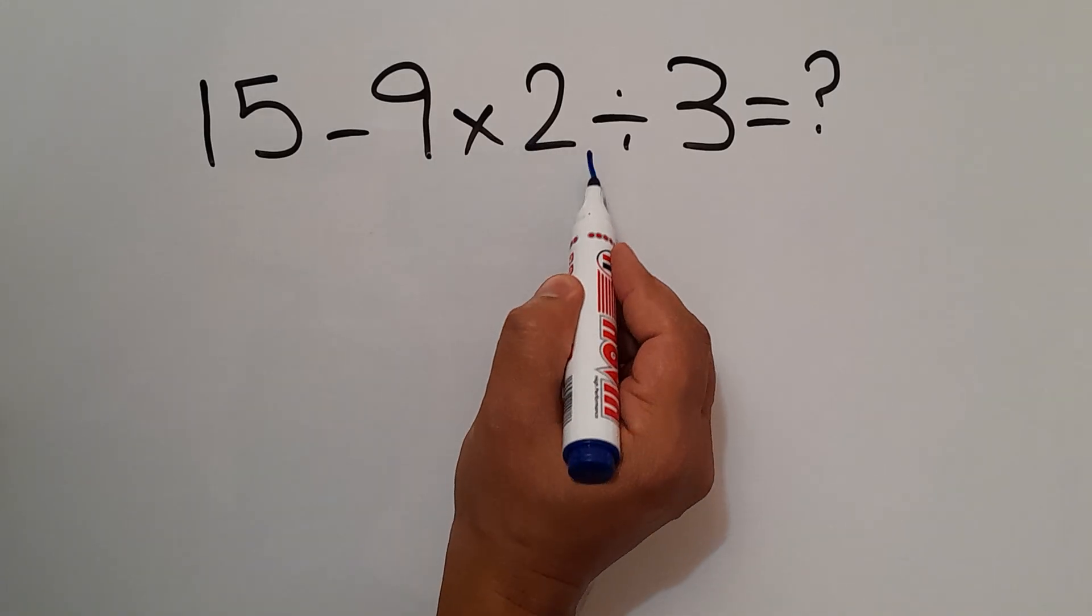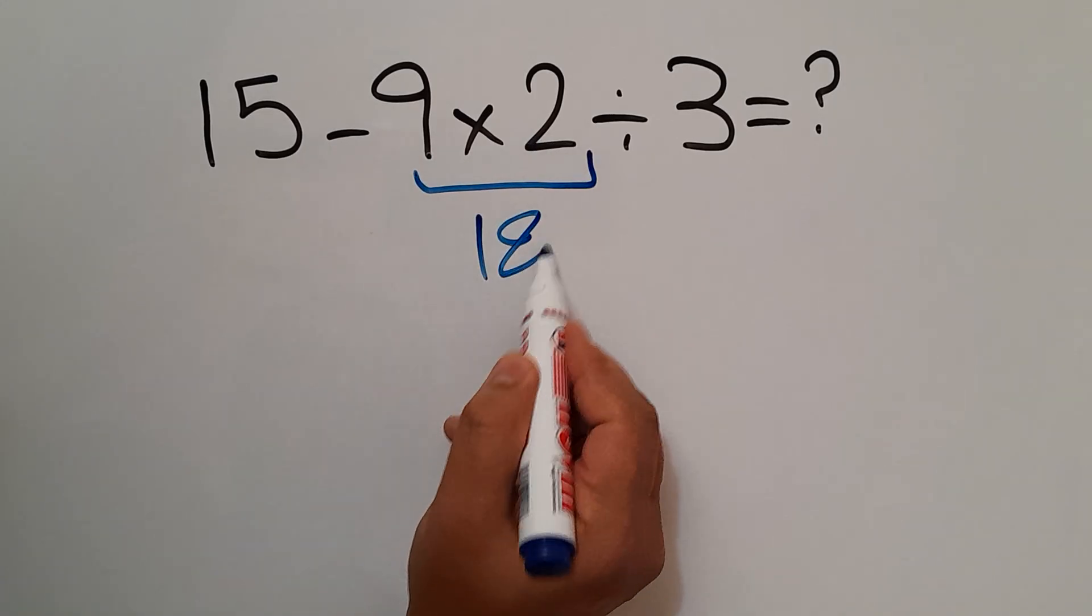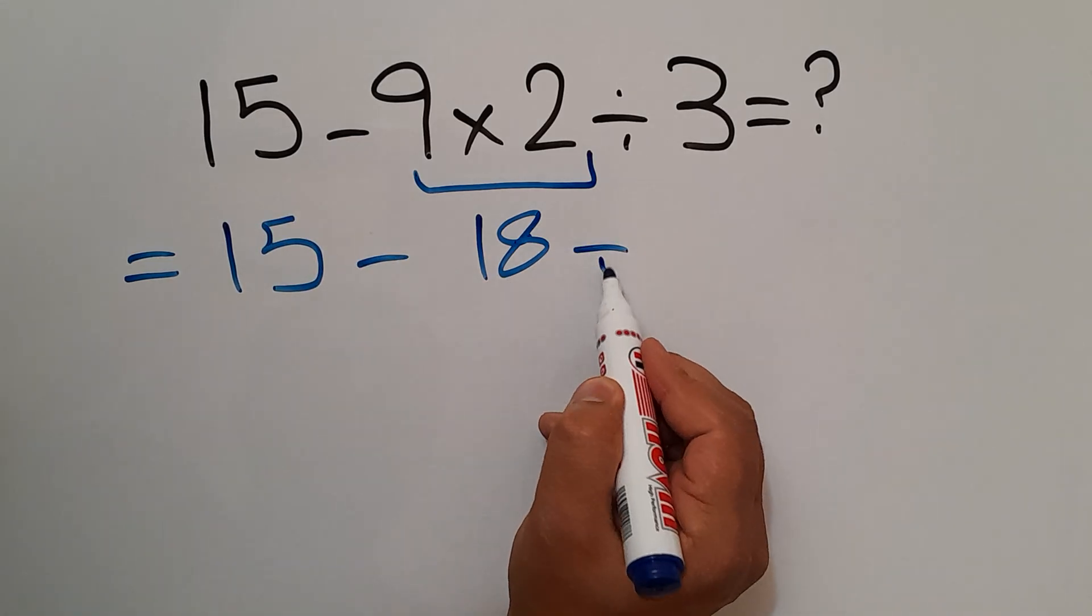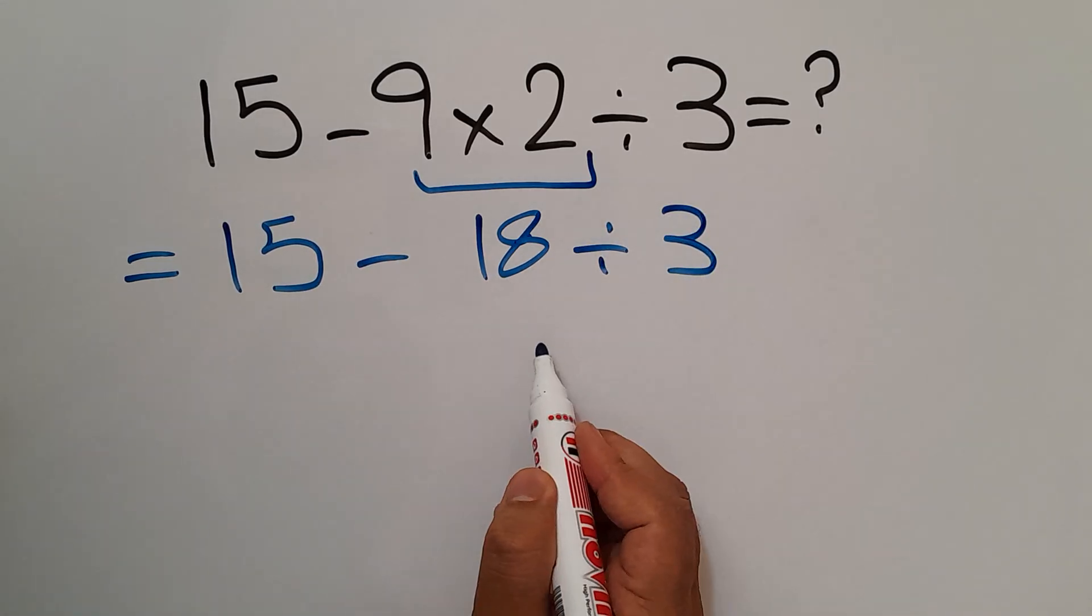9 times 2 gives us 18. So, we have 15 minus 18 divided by 3.